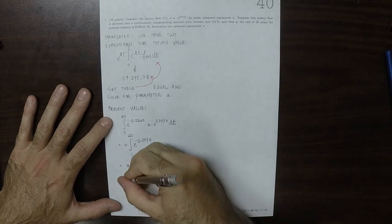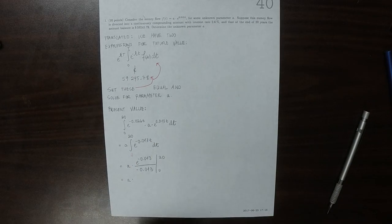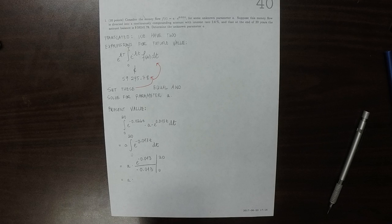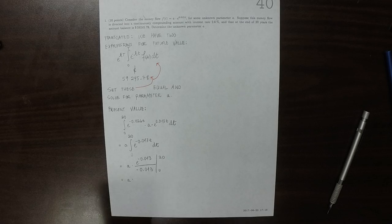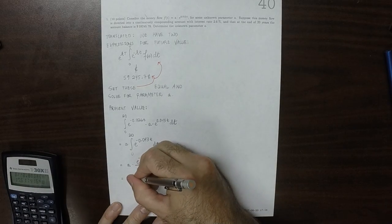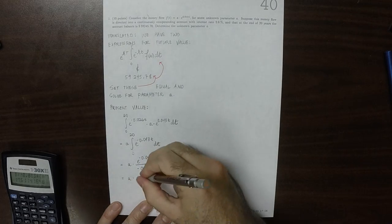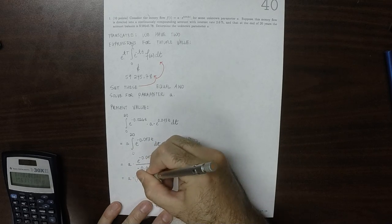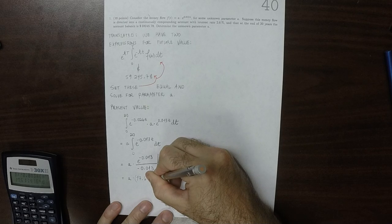Okay, then plugging that in. That would be A multiplied by exponential negative 0.013 times 20, and then minus the exponential of 0, which is 1. So that's A times 17.61141648.